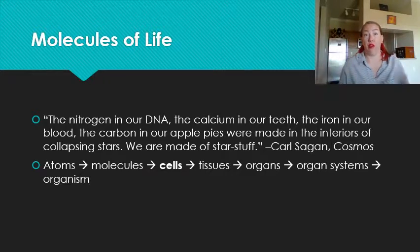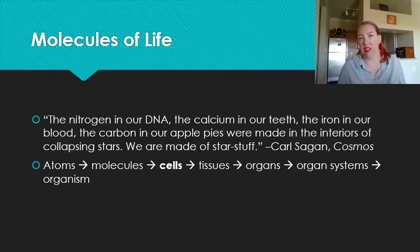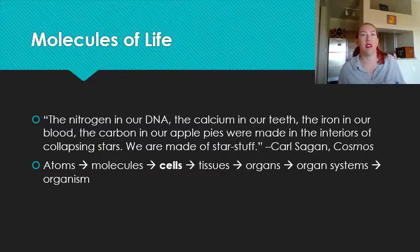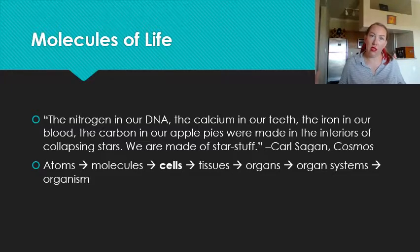Say a supernova occurs. Countless tons of matter, atoms of different elements, are scattered through space: hydrogen, oxygen, calcium, carbon, phosphorus, and other elements. After they're blown into space, they collect into these clouds of gas and dust called nebulae.